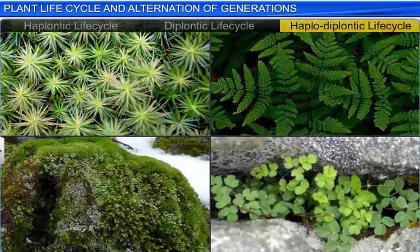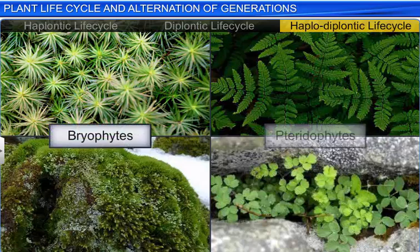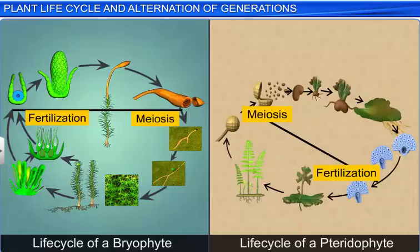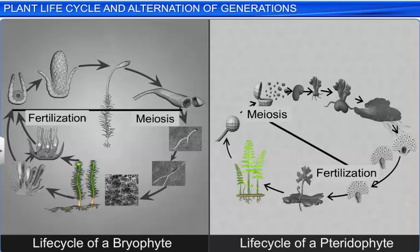In the haplodiplontic life cycle, observed in bryophytes and pteridophytes, both sporophytic and gametophytic generations are multicellular and free-living. However, the dominant phases are different in the life cycle of bryophytes and pteridophytes.